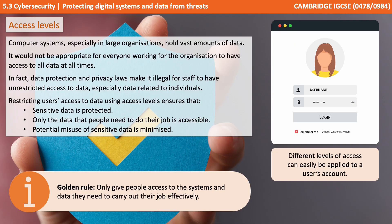The first we discuss is access levels. Computer systems, especially in large organisations, hold vast amounts of data. It would not be appropriate for everyone working for the organisation to have access to all data at all times. In fact, data protection and privacy laws would make it illegal if staff had unrestricted access to data, especially data related to individuals. Restricting users' access to data by using access levels makes sure that sensitive data is protected, so that only data people need to do their jobs is accessible, and therefore minimises the potential for misuse of sensitive or private data.